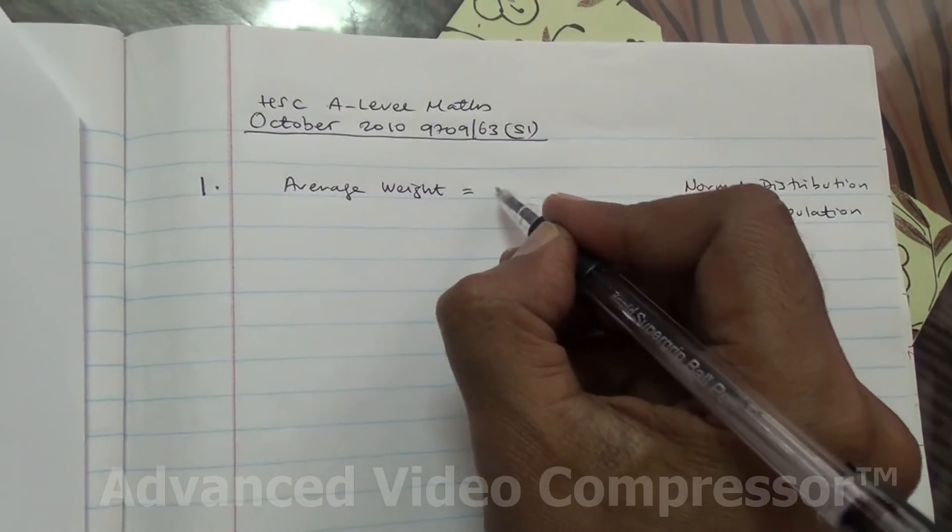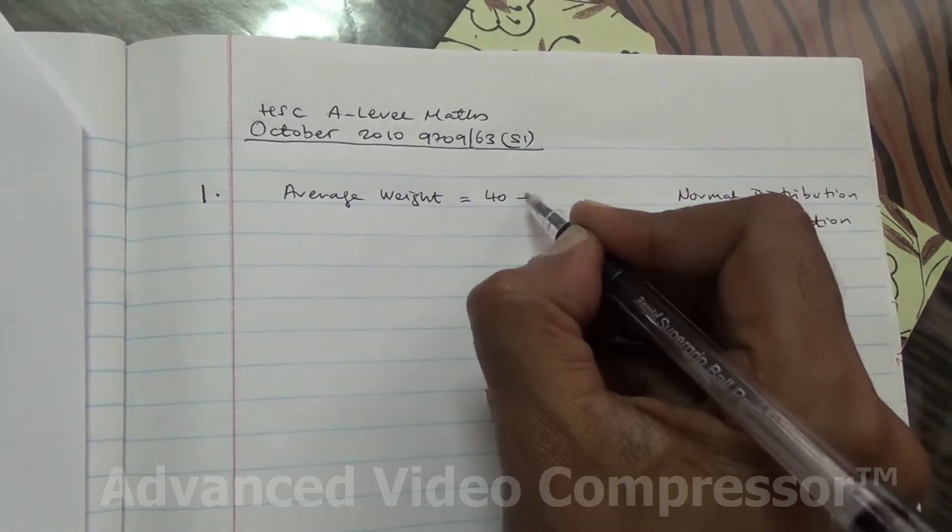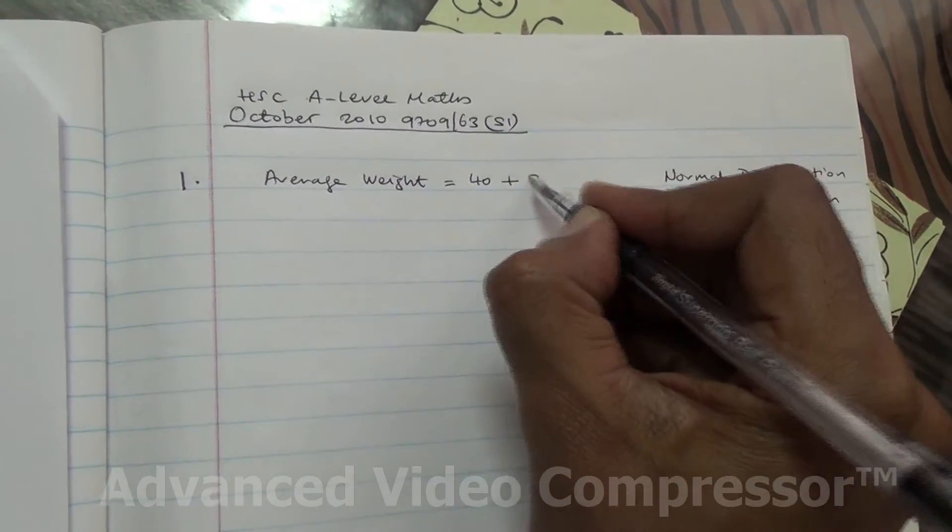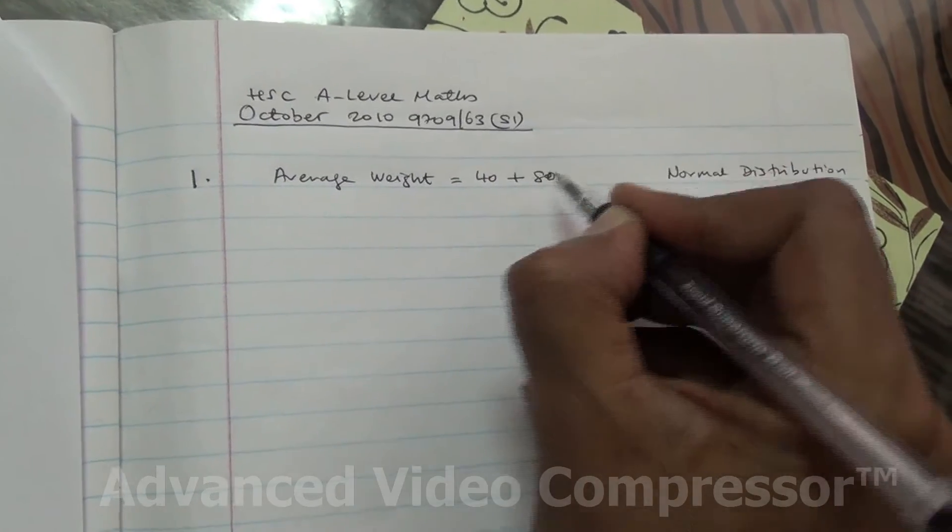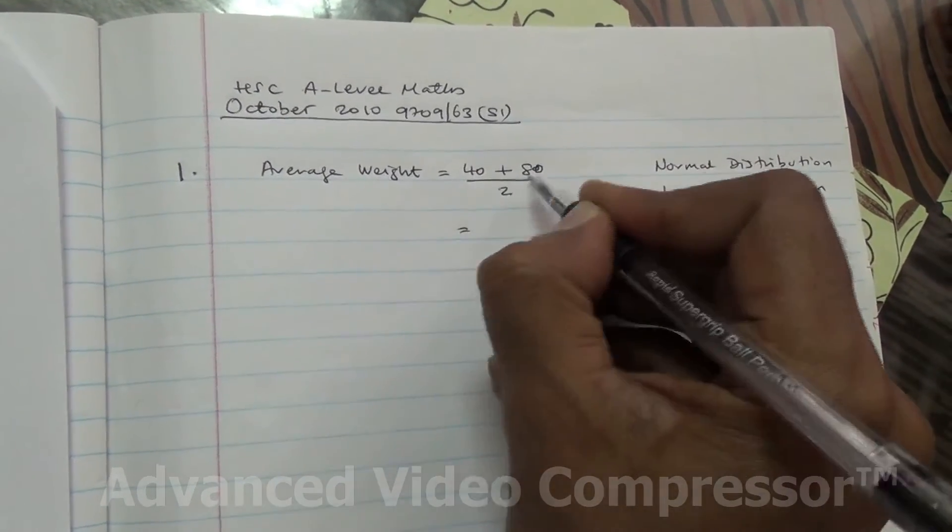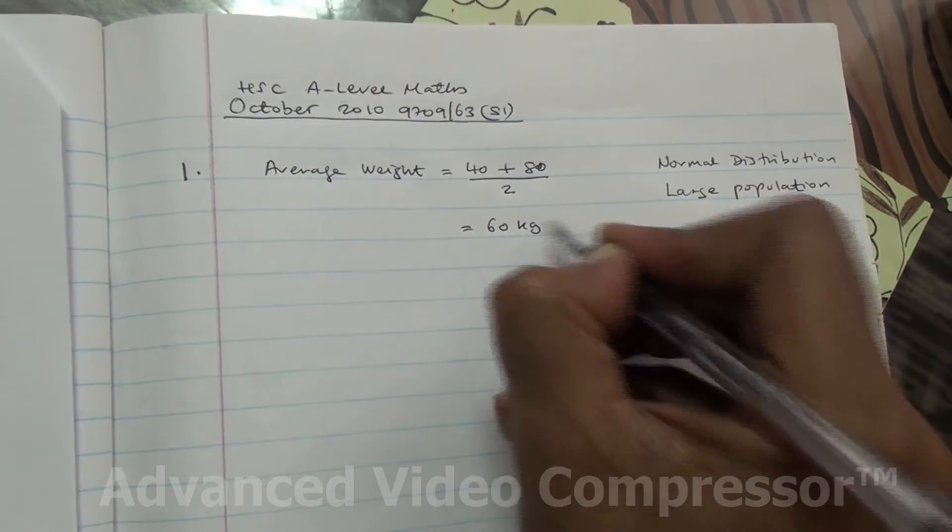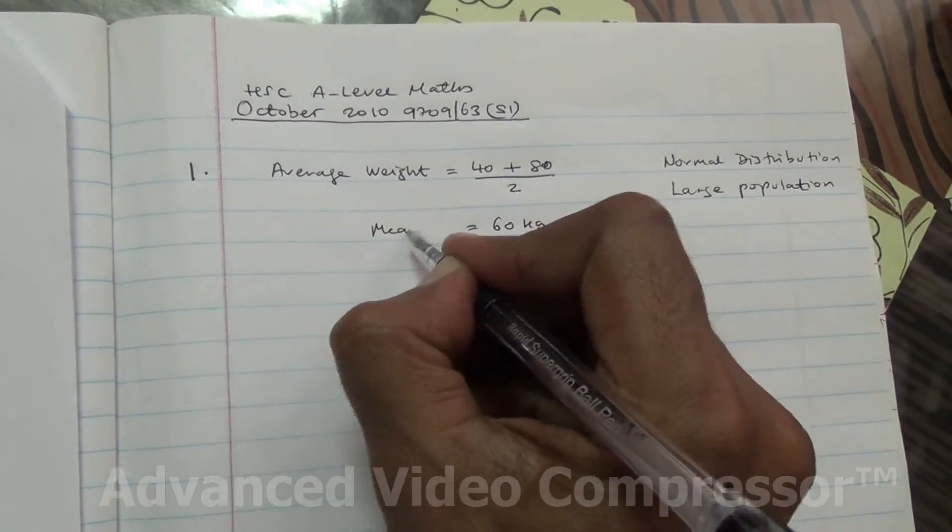The average weight, I would say probably from 40 to let us say 80 kilograms. And therefore, we're going to divide this by 2, and we're going to end up with 60 kilograms. So I would say that should be the mean.